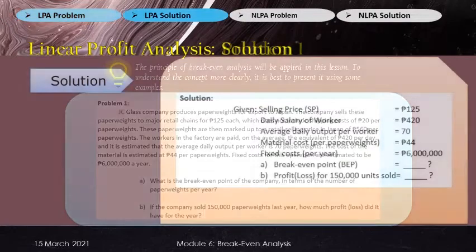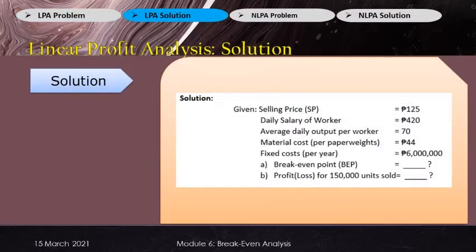First things first, we have the given terms and amounts which are important to compute the break-even point. Selling price is 125 pesos, daily salary of worker is 420 pesos, average daily output per worker is 70, material cost is 44 pesos, and fixed cost per year is 6 million pesos.